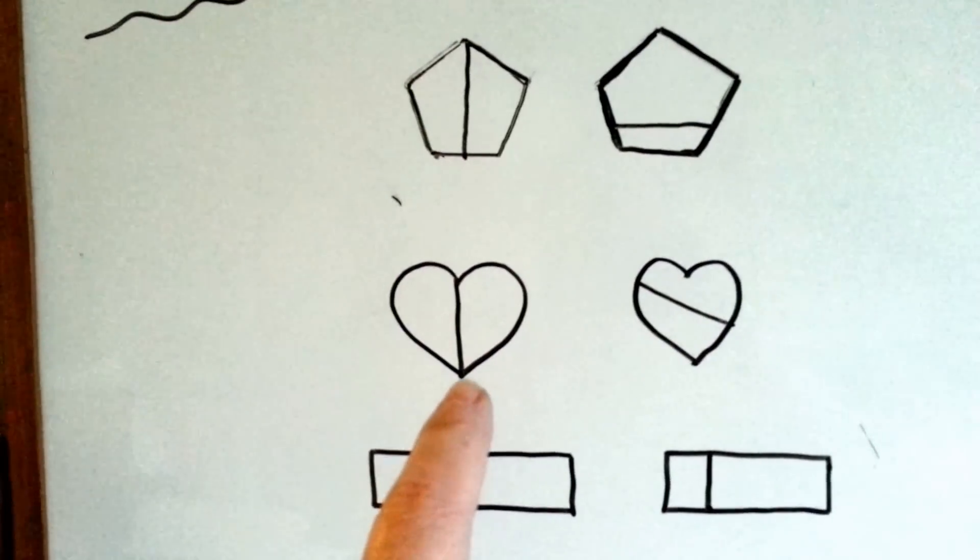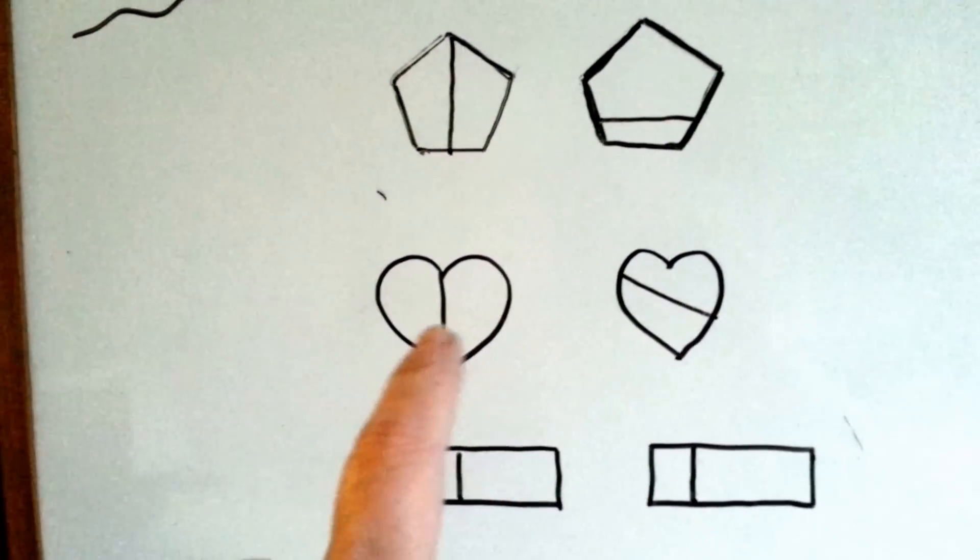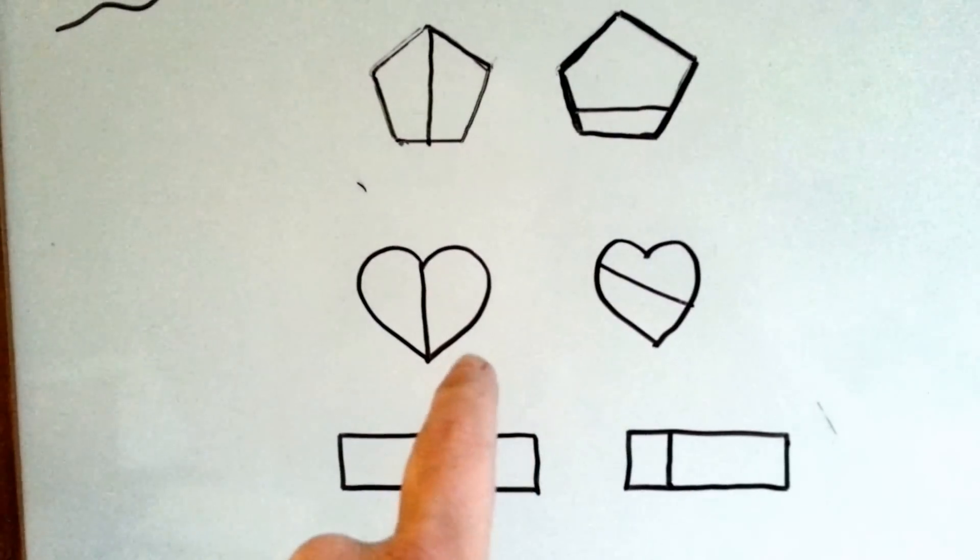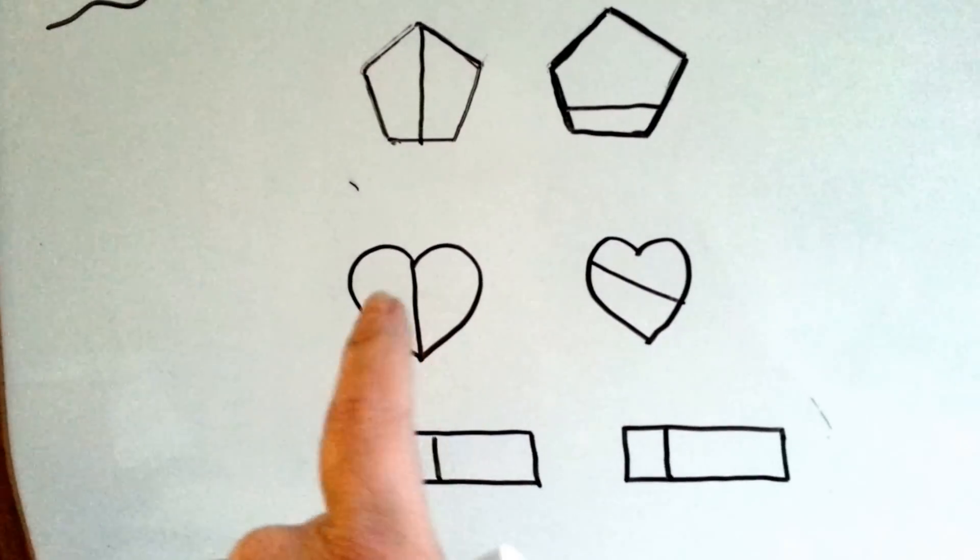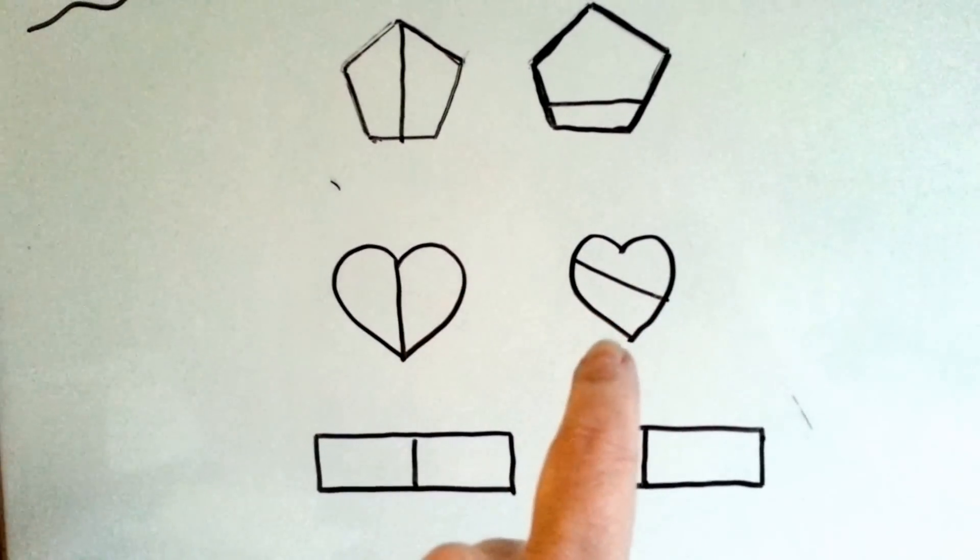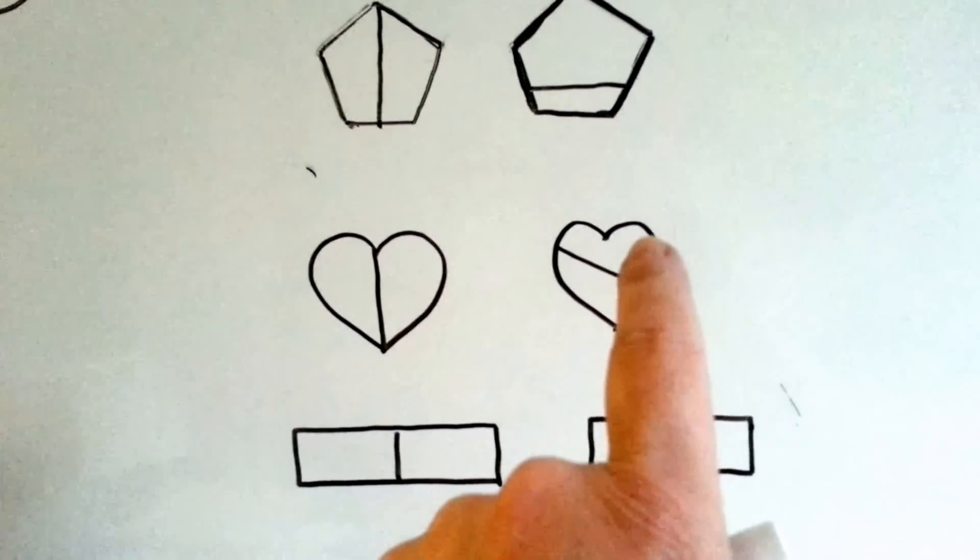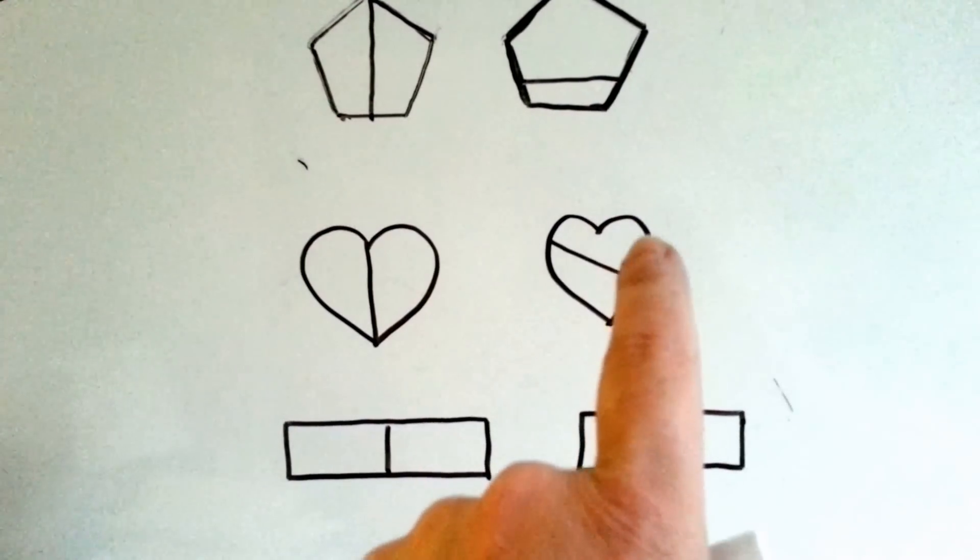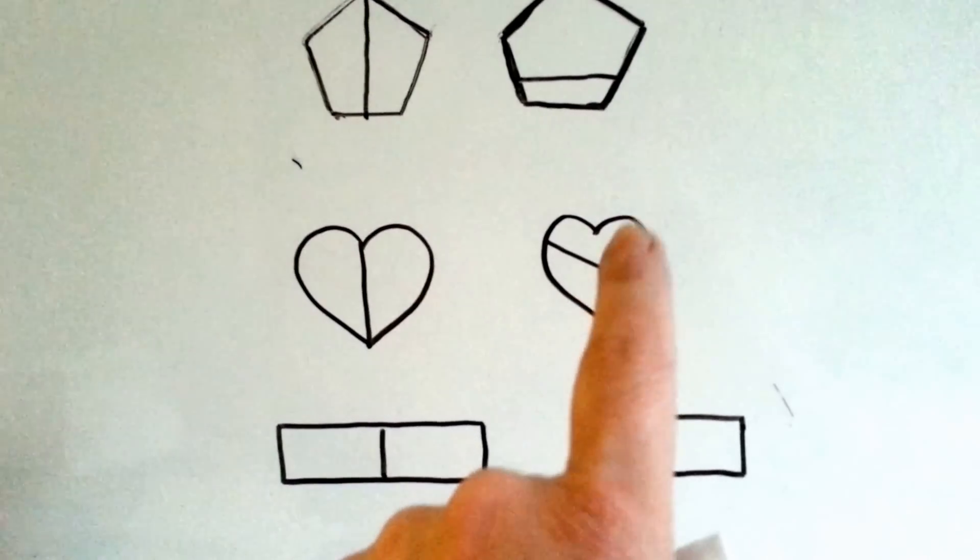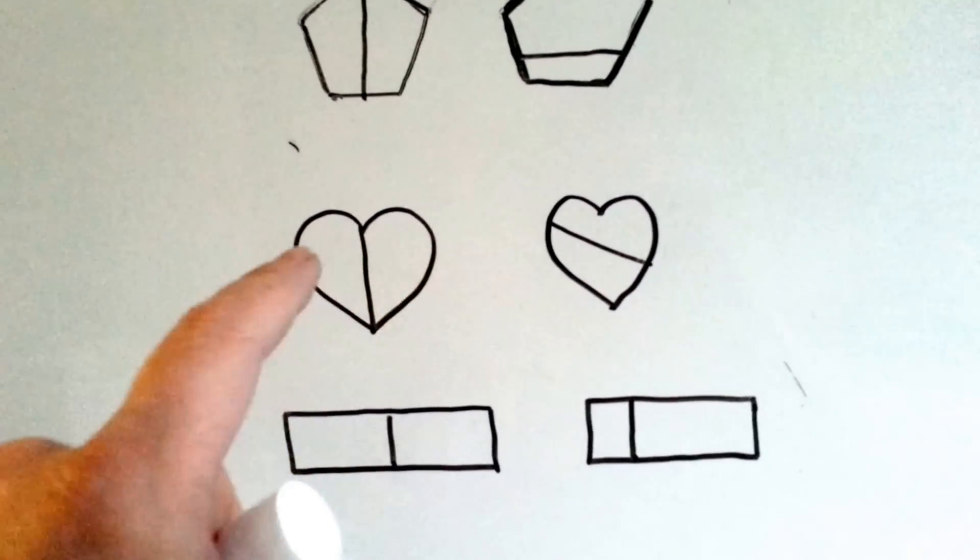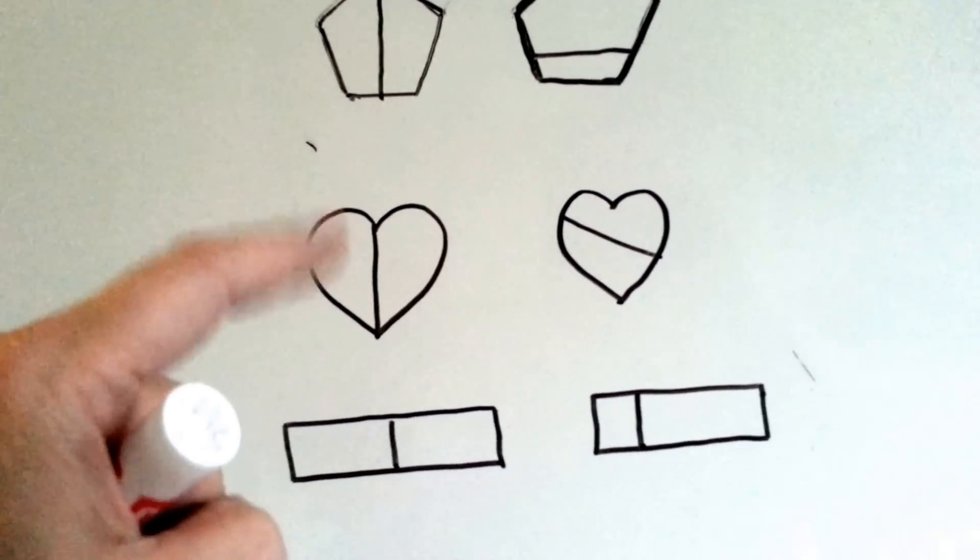Look at this Valentine heart. If this was a cookie, which one would you say would be an equal share for both people? This one or this one? Well, this one's got a big huge hump on this side, so that piece of the cookie might be bigger. But it's not equally split, is it? This one is. Each person would get a half. One side would be a half.